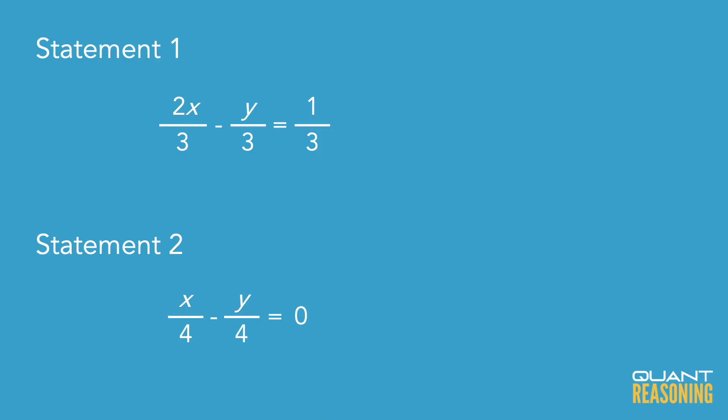So with statement one, zooming in by a factor of three, we get 2x minus y equals one. And with statement two, zooming in by a factor of four, we get x minus y equals zero.